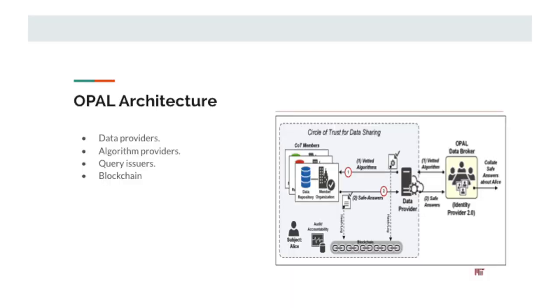This is just a rough schema of what OPAL actually looks like. We have data providers, which could be anybody with a piece of data that they want to share. Then we have algorithm providers. And then there's the query issuers. We have a separation between the algorithm providers and the people who want to run the computation or get the answer. And then we have a blockchain.